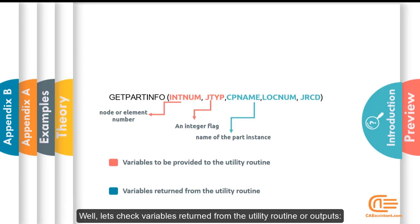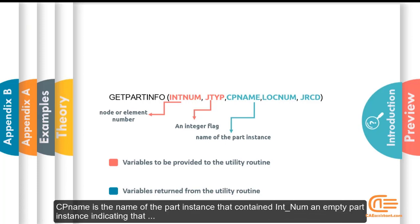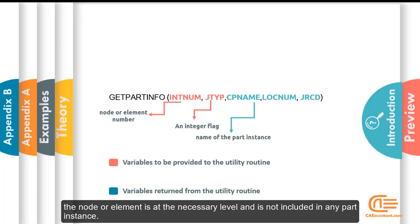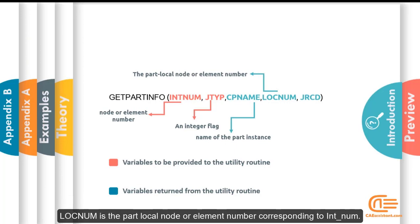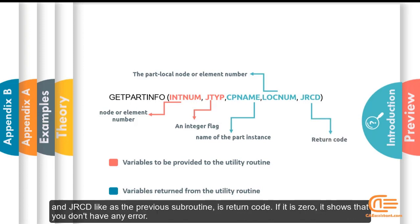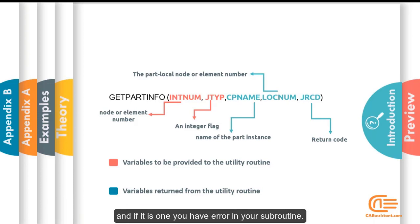Well, let's check variables returned from the utility routine or outputs. CPNAME is the name of the part instance that contain INTNUM and empty part instance indicating that the node or the element is at the necessary level and is not including in any part instance. LOCNUM is the part local node or element number corresponding to INTNUM. It is completely clear that it depends on the INTNUM, it is node or it is the element. And JRCD like as the previous subroutine is return code. If it is 0, it shows that you don't have any error. And if it is 1, you have error in your subroutine.